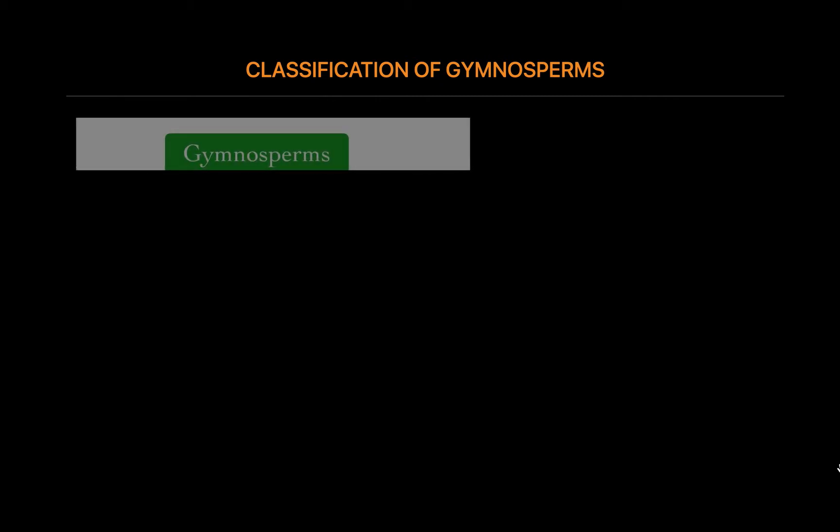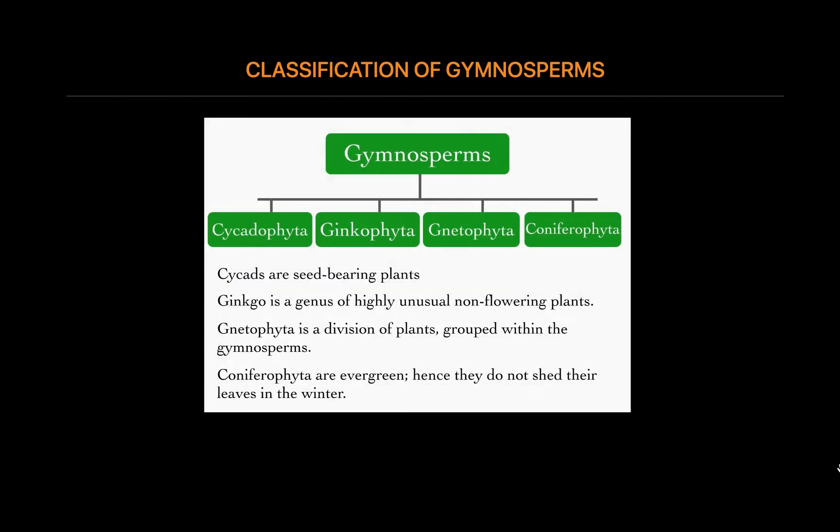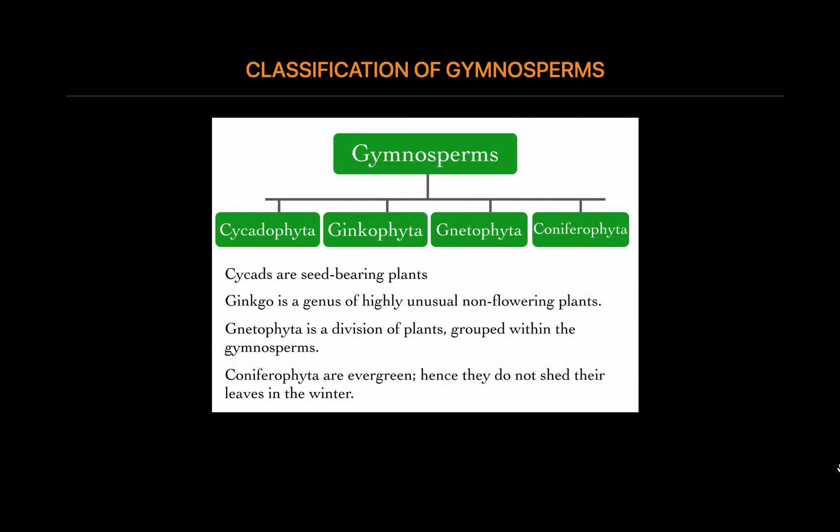Classification of Gymnosperms: Gymnosperms are classified into four types — Cycadophyta, Ginkgophyta, Gnetophyta, and Coniferophyta.